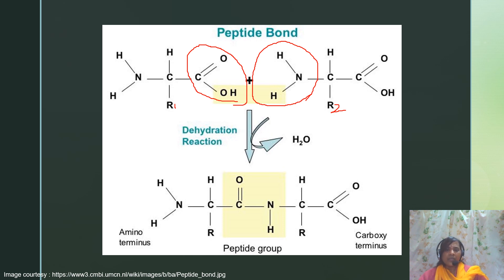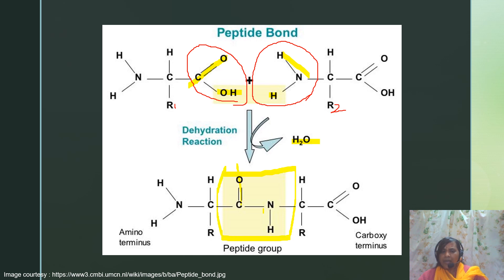This is a condensation reaction where OH from the carboxylic acid group and a H from the alpha amino group are removed as a water molecule, so it is also called a dehydration reaction. After the removal of a water molecule, what remains is CO and NH, and they link together to form an amide linkage or a peptide bond.